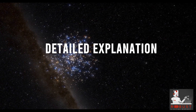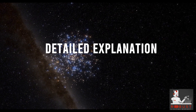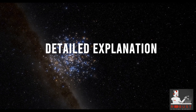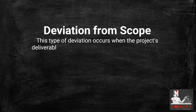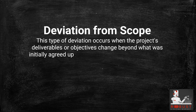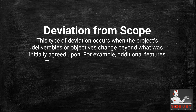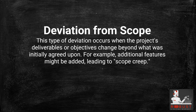Detailed Explanation — Deviation from Scope: This type of deviation occurs when the project's deliverables or objectives change beyond what was initially agreed upon. For example, additional features might be added, leading to scope creep.